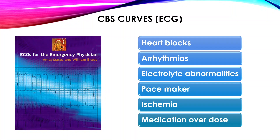For the ECG part of the CBS curve station, the book 'ECGs for the Emergency Physician' is very helpful — it has 200 questions. Completing 100 questions before the exam is normally sufficient for those already practicing critical care medicine and looking at ECGs daily. The normal questions asked in the exam cover heart blocks, arrhythmias, electrolyte abnormalities, pacemaker rhythms, ischemia, and medication overdose.